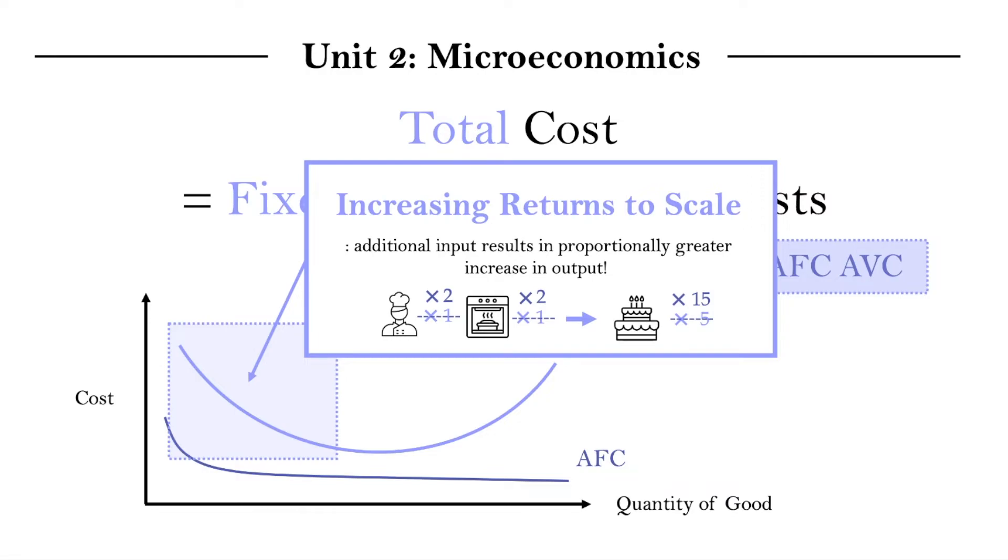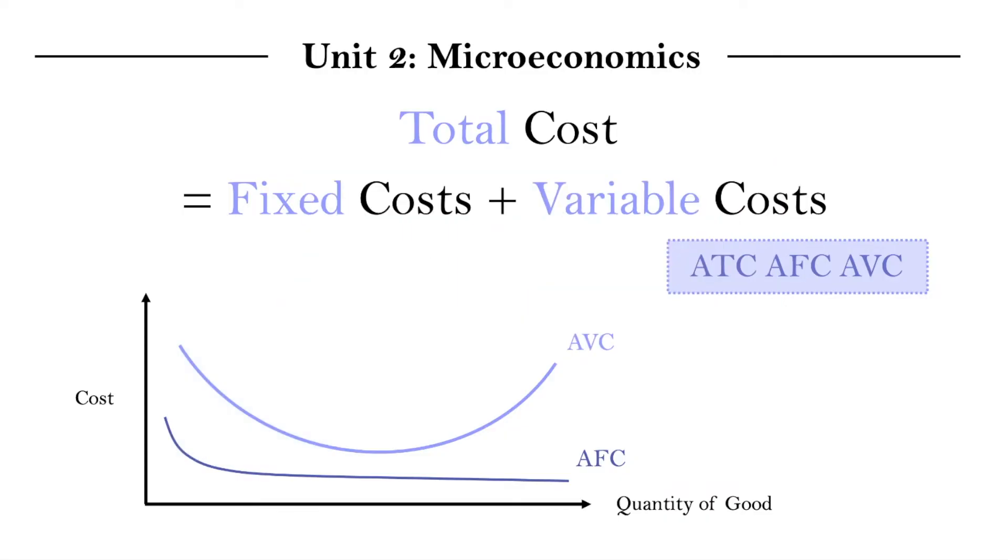And this is the idea of increasing returns to scale that can help us understand why our average variable cost curve would, at least in this first part, start sloping down. Because as our variable costs increase with us adding in more input, the quantity of our outputs is growing faster and thus the average is able to fall.